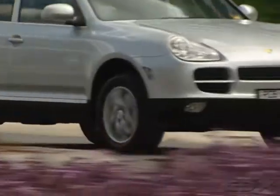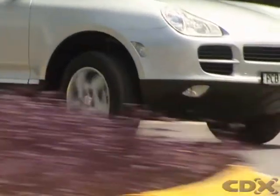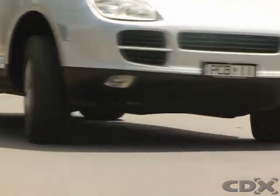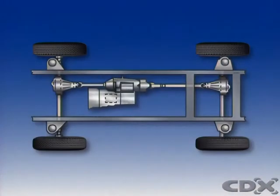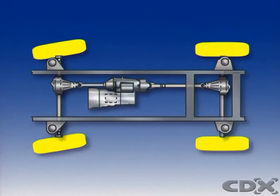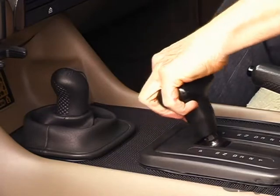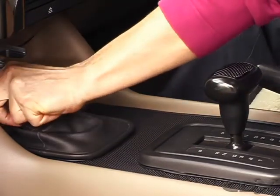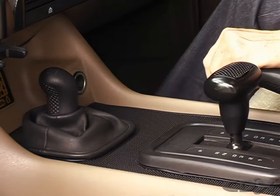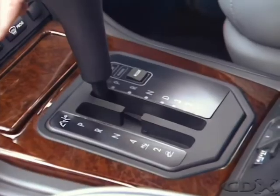When four-wheel drive is disengaged, most part-time four-wheel drive vehicles drive the rear wheels. Constant four-wheel drive uses a third differential in the transfer case, which allows for the difference in speed between the front and rear wheels during cornering. The driver can still lock the front and rear axles together by moving a separate lever, as in a conventional four-wheel drive.